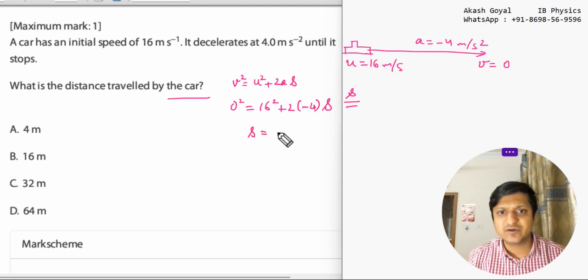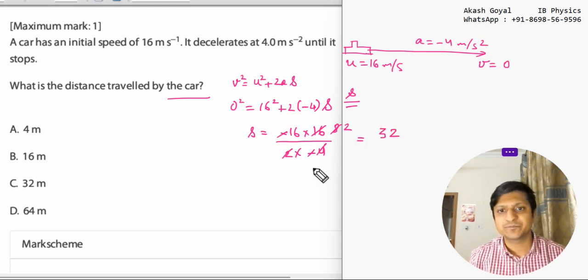So s will be equals to minus 16 into 16 divided by 2 into minus 4. So minus with minus cancels, with 2 it is 8, with 4 then 4 to the 8, then 16 to the 32. So s equals to 32 meters.